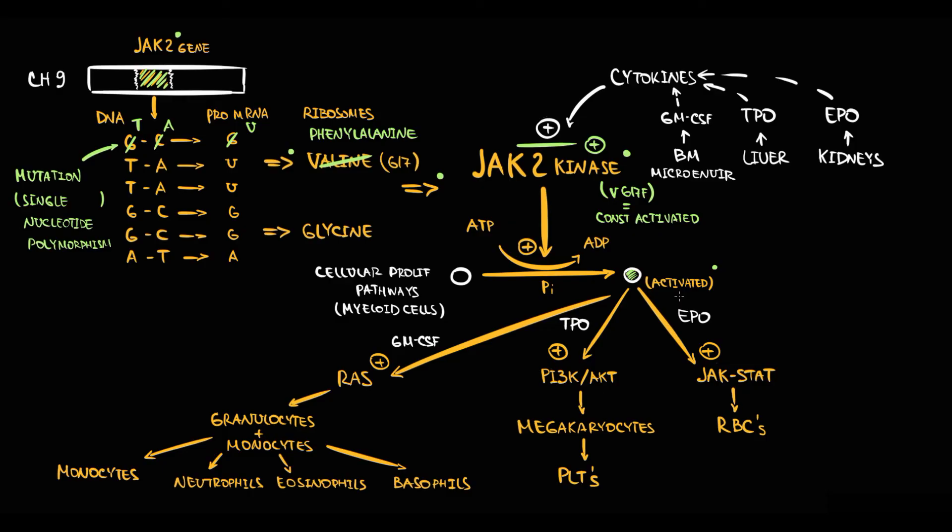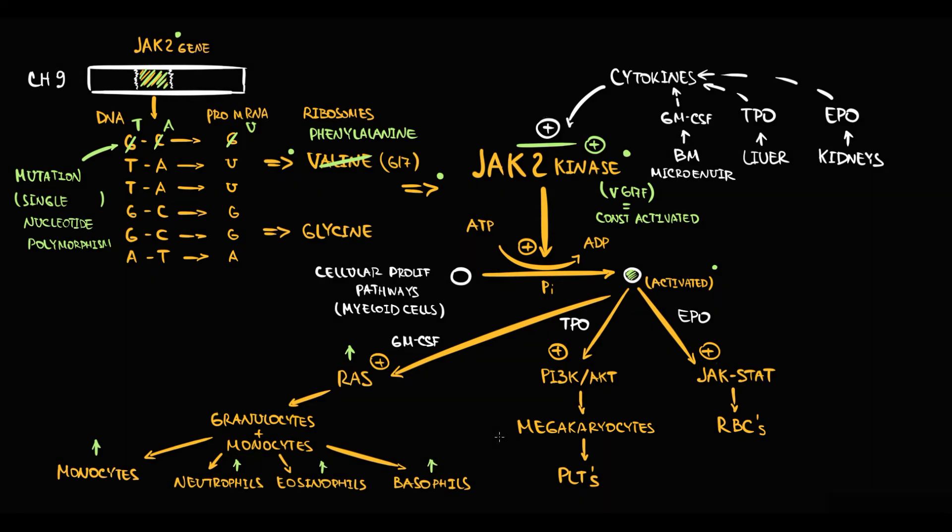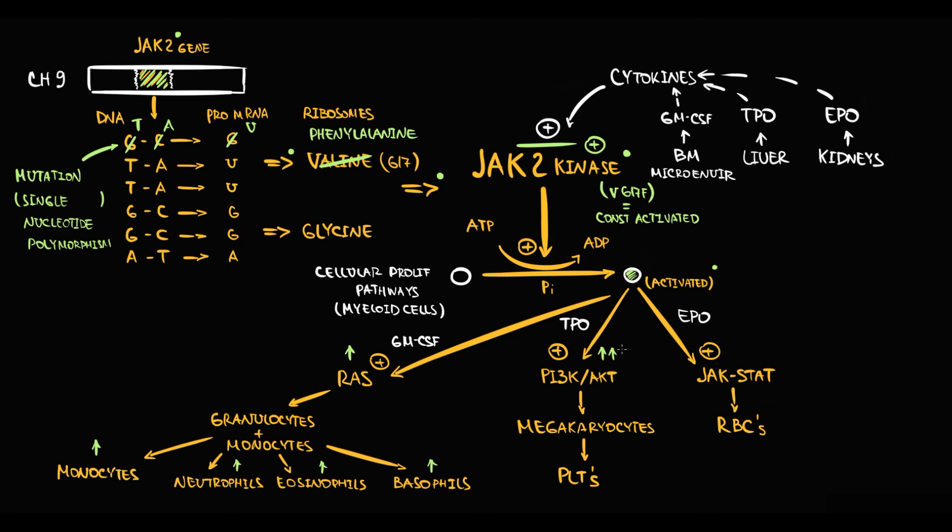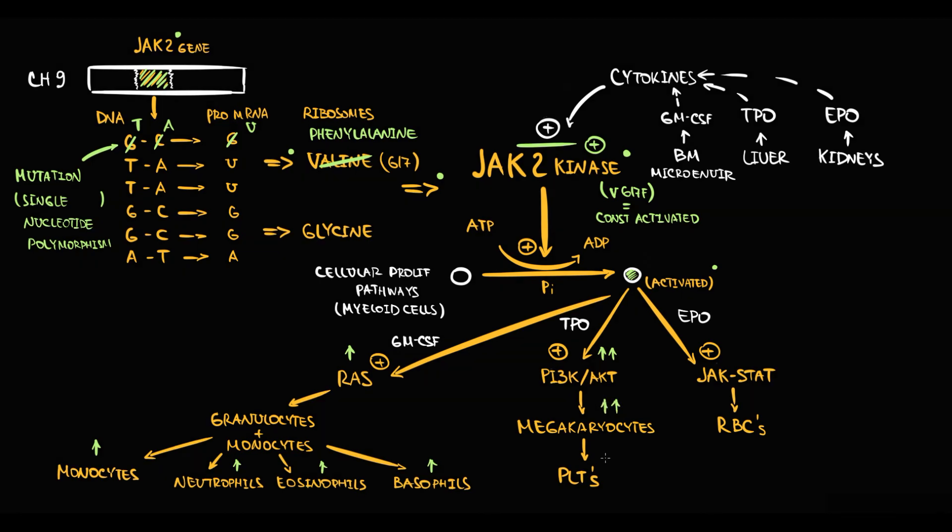Interesting that this mutation causes disproportional activation of intracellular pathways. Such mutated JAK2 kinase causes mild activation of RAS pathway, resulting in mild increase in production of monocytes and all granulocytes, particularly basophils. It causes moderate activation of PI3K-AKT pathway, resulting in moderate increase in megakaryocytes and thereby platelet production. The most significant activation occurs to JAK-STAT pathway, resulting in huge increase in red blood cells in the blood.